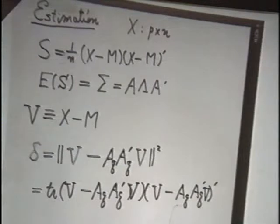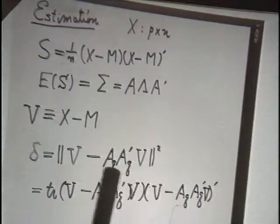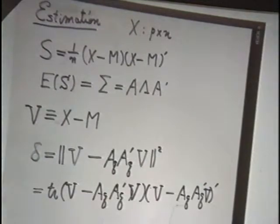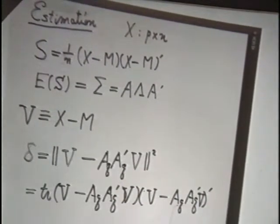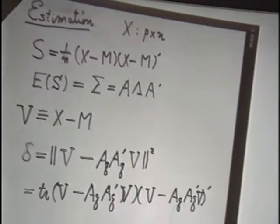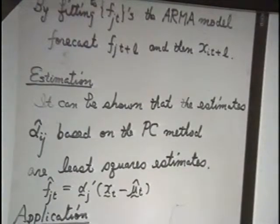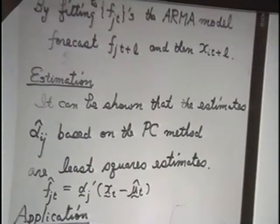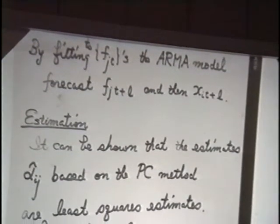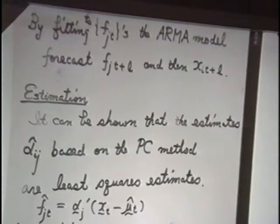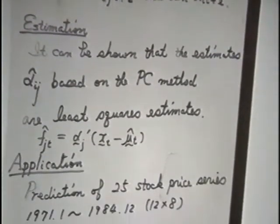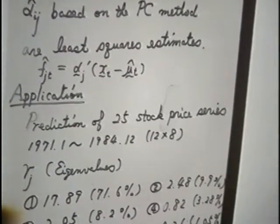And the estimate of A is the coefficient of the principal components. And also, we estimate Fj hat as a principal component score. That means everything goes through the principal component method, but here, which is consistent with the time series structure in this model. Now, I'd like to talk about one application, which is the prediction of the stock prices of 25 pharmaceutical companies in Japan.